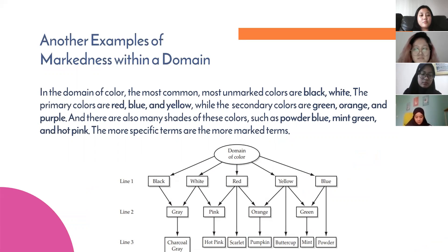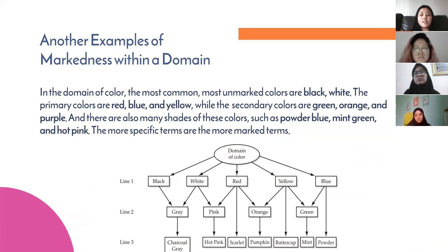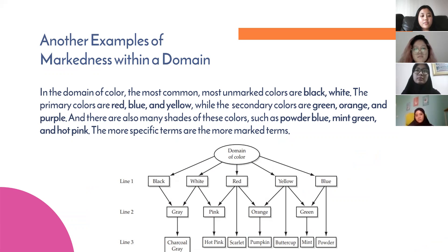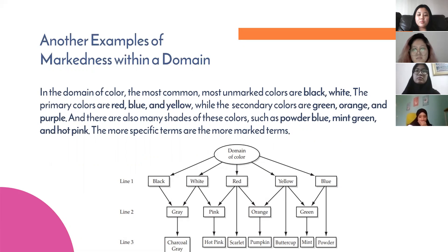Another example of markedness within a domain is color. The most common, most unmarked colors are black and white. The primary colors are red, blue, and yellow, while the secondary colors are green, orange, and purple. There are also many shades, such as powder blue, mint green, and hot pink. The more specific terms are the more marked terms. The words in line one are the most unmarked, most general, and most common. In line two are more marked, more specific, and more uncommon. And the words in line three are the most marked, most specific, and most uncommon.